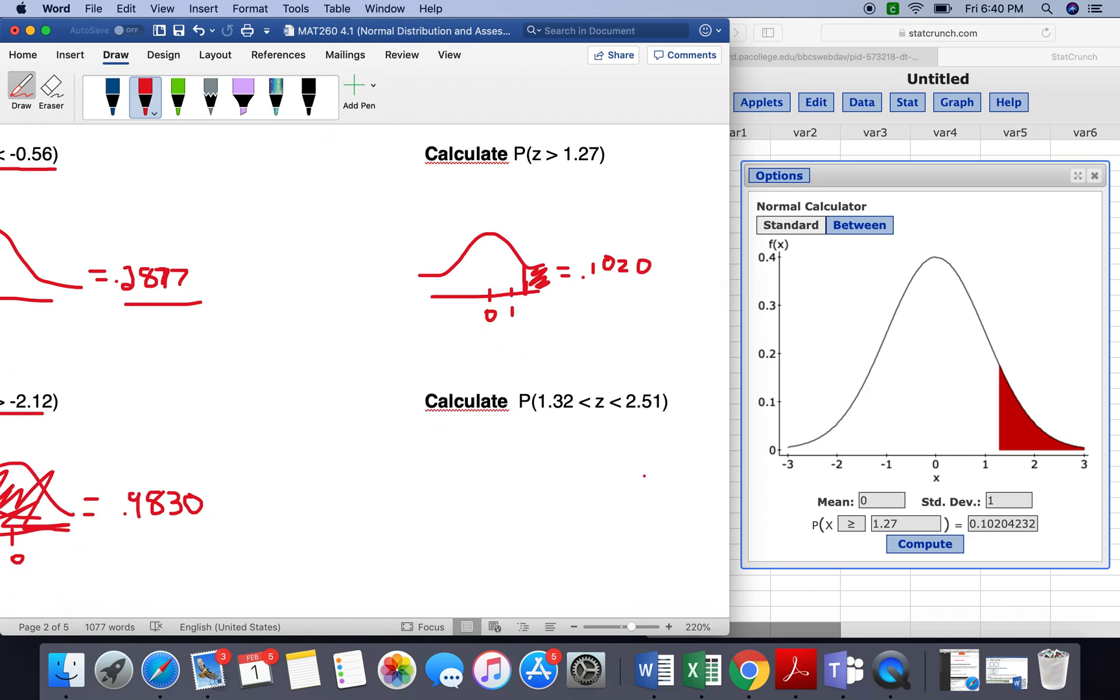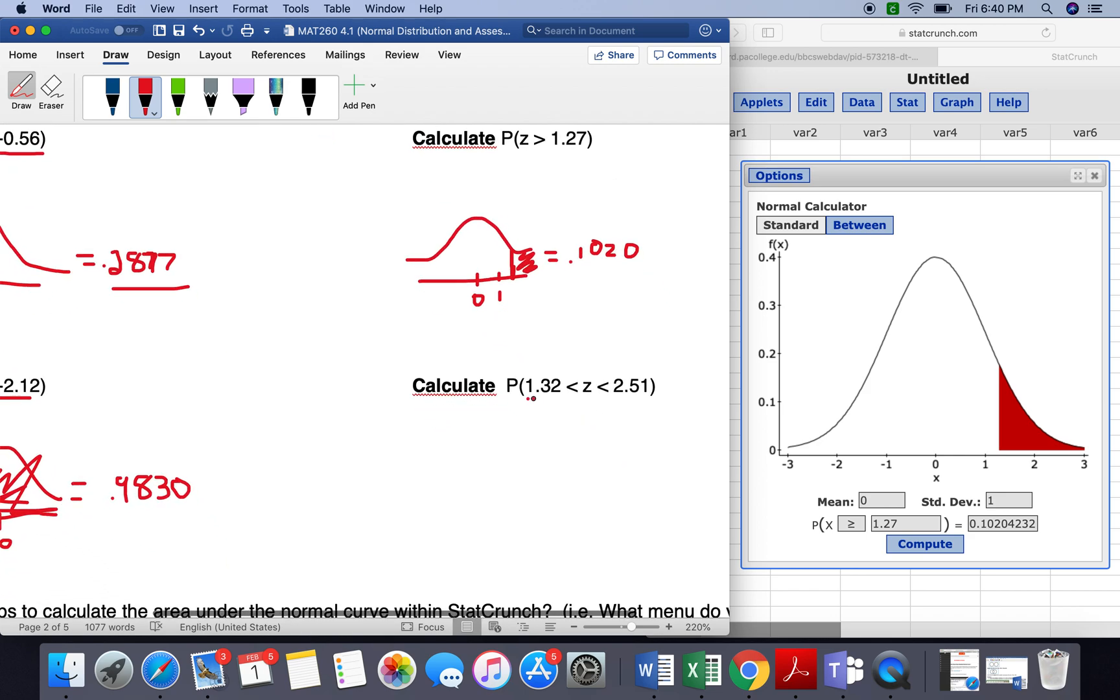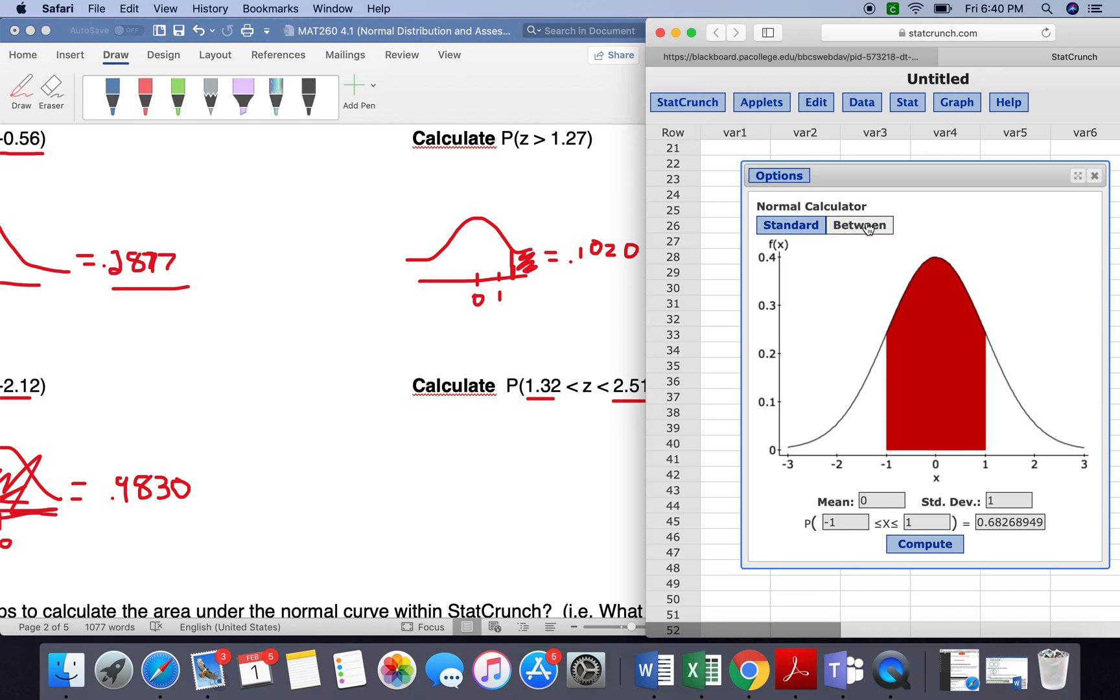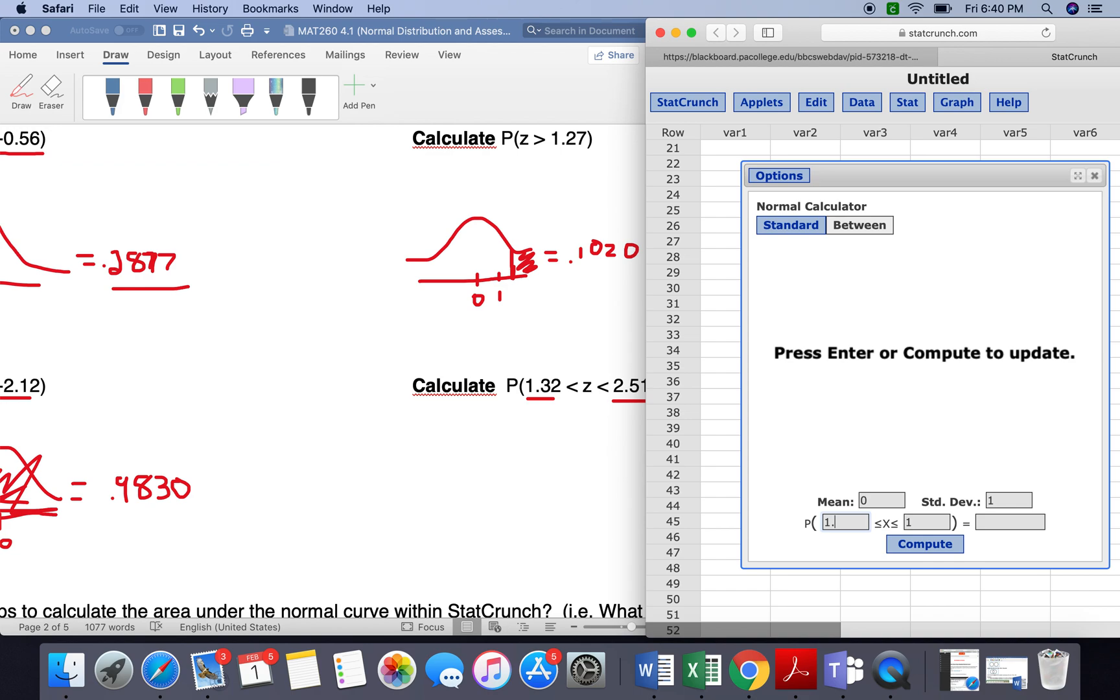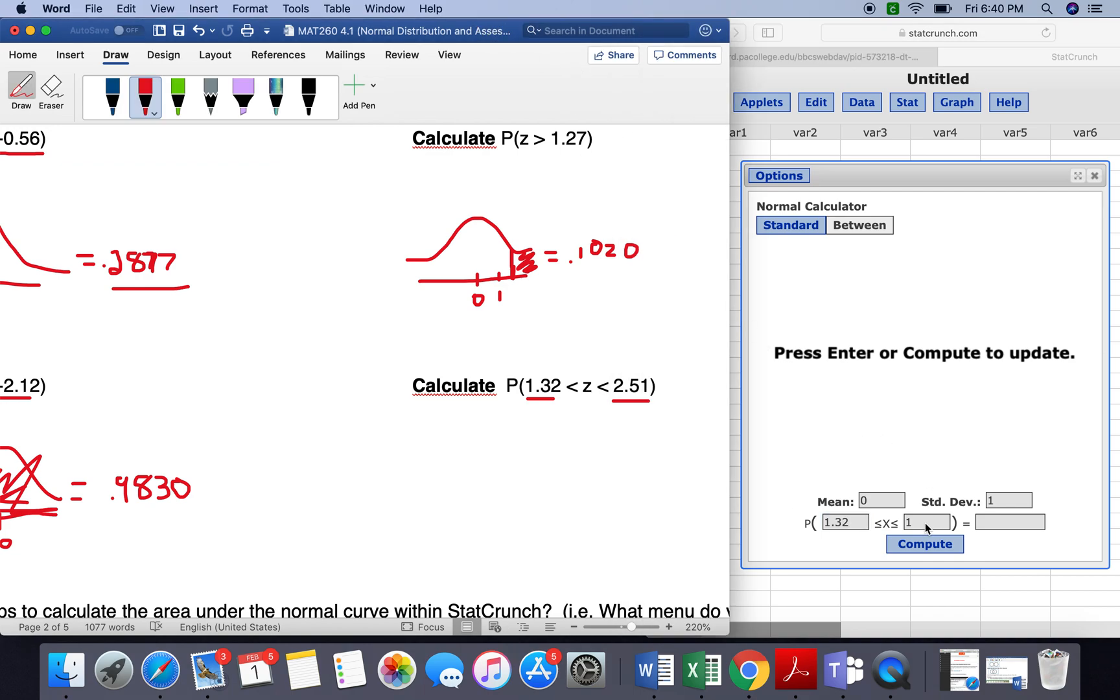So the last type of problem that we have here is in between. So we want in between 1.32 and 2.51. So to do that, we're going to click on between up here at the top, and we're going to put the 1.32 here and the 2.51.